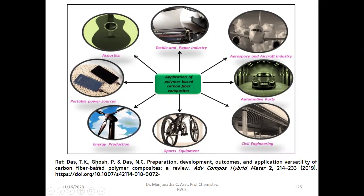According to Das Tickend et al., they published a review paper on carbon fiber in Advanced Composites and Hybrid Materials last year, giving detailed explanation about carbon fiber preparation, properties, and applications. They reported that carbon fibers are used in textile and paper industries, aerospace and aircraft industries, automobile parts, civil engineering for construction of lightweight high-strength pillars, sports equipment including bicycles, energy production such as wind wheels and wind fans, portable power sources, and also acoustics — a large number of applications for carbon fibers.